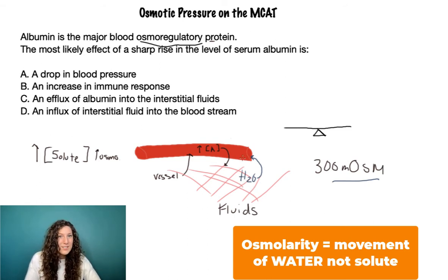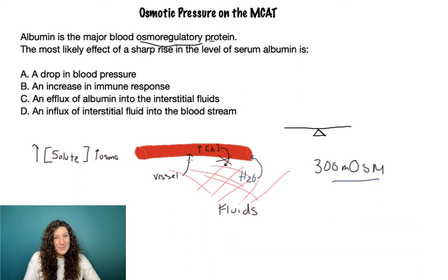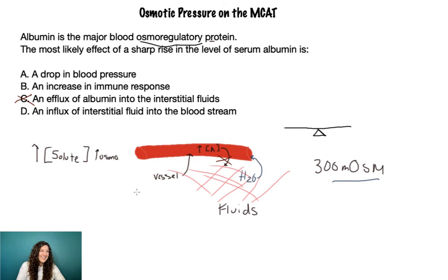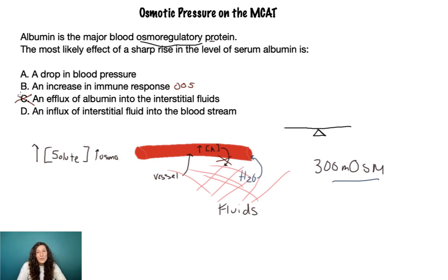Osmolarity, osmosis, and osmoregulation all relate to water movement in response to increased solute concentration in one compartment. Albumin moving is not our answer because that's not osmoregulation — so we can eliminate answer C. An increase in immune response is out of scope; we're focusing on water movement, and an immune response is not likely involved in osmoregulation.